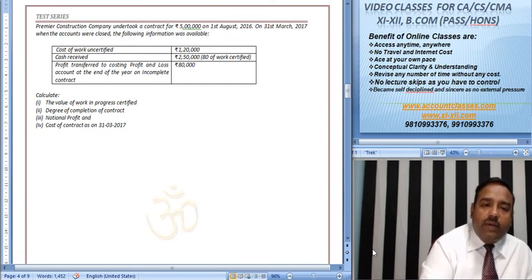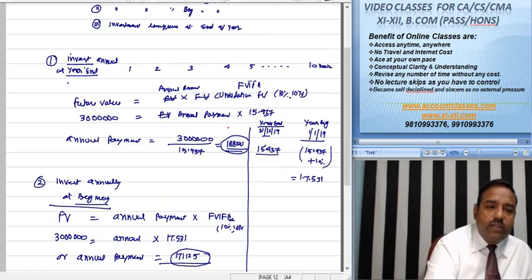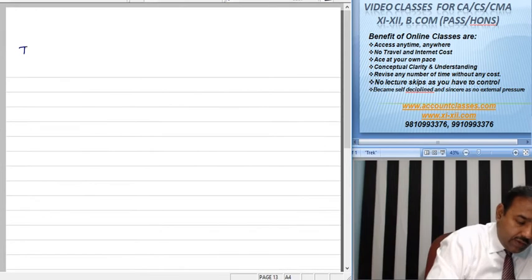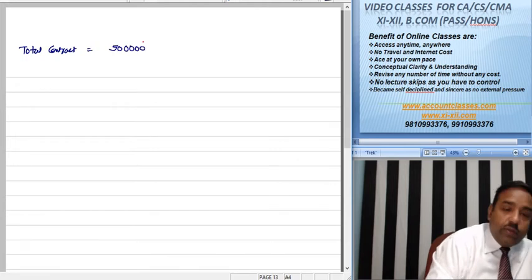Now, we have the total contract value. Let's start with this calculation. You can see the total contract is Rs. 5 lakhs.